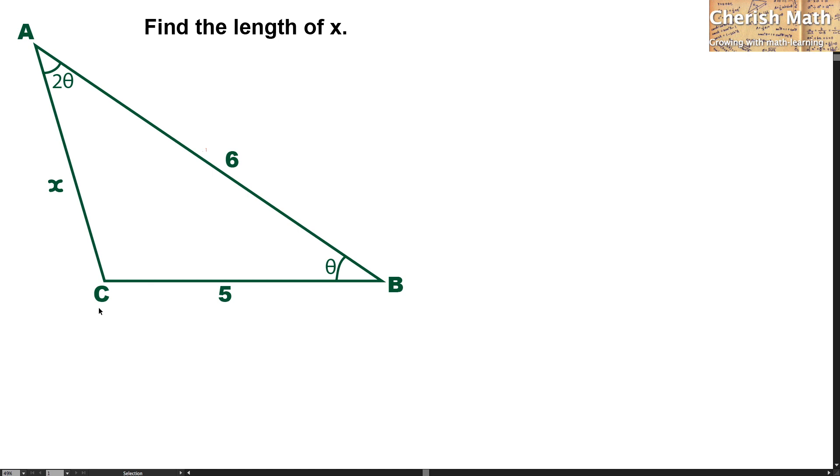Here AC is the length of x. AB is 6 units, BC is 5 units. This is with the angle theta, and this angle is 2 theta.